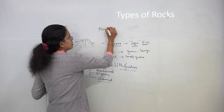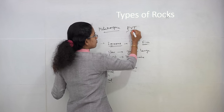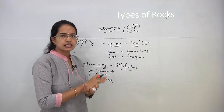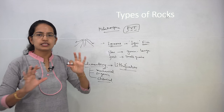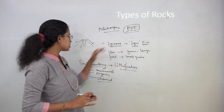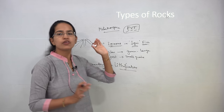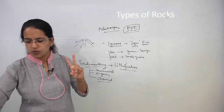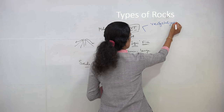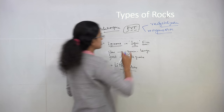The next is metamorphic rock. A good term to remember is PVT — pressure, volume, and temperature. Under metamorphic processes, more pressure is exerted, the volume changes, and temperature changes occur. If igneous or sedimentary rock is subjected to high pressure or temperature, there would be a change in structure and formation, leading to metamorphic rock. Two important processes common to metamorphic rock are recrystallization and reorganization.